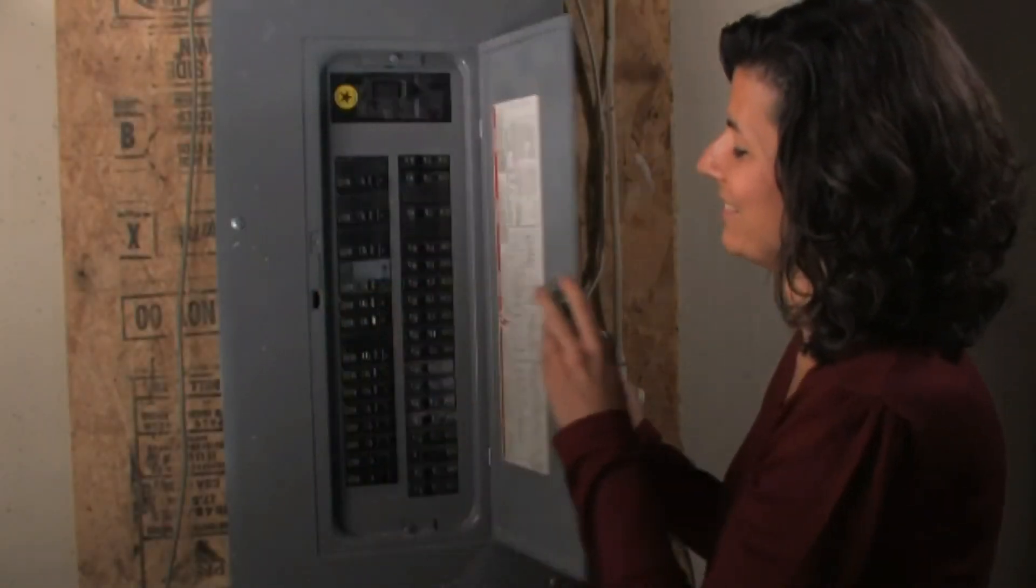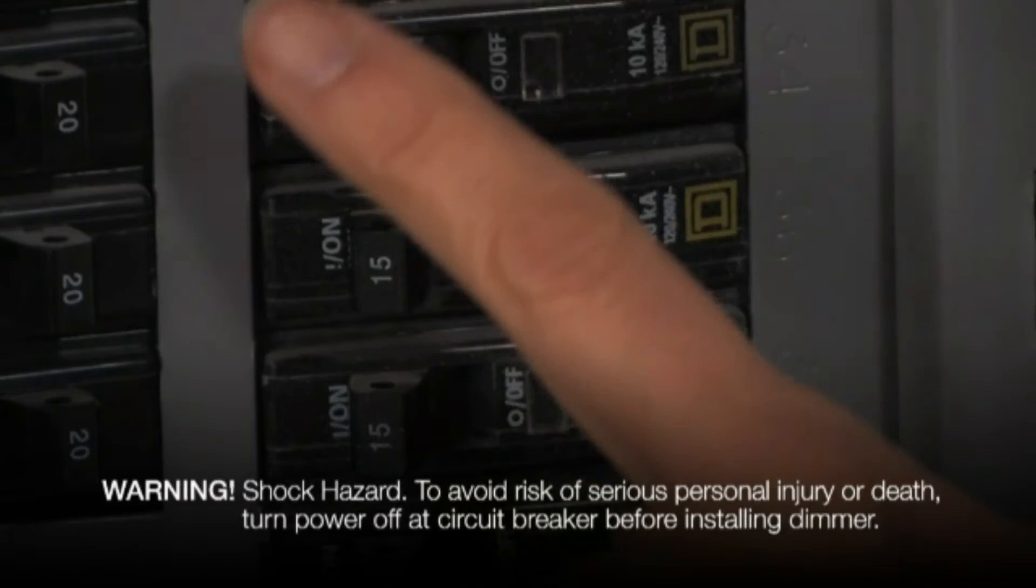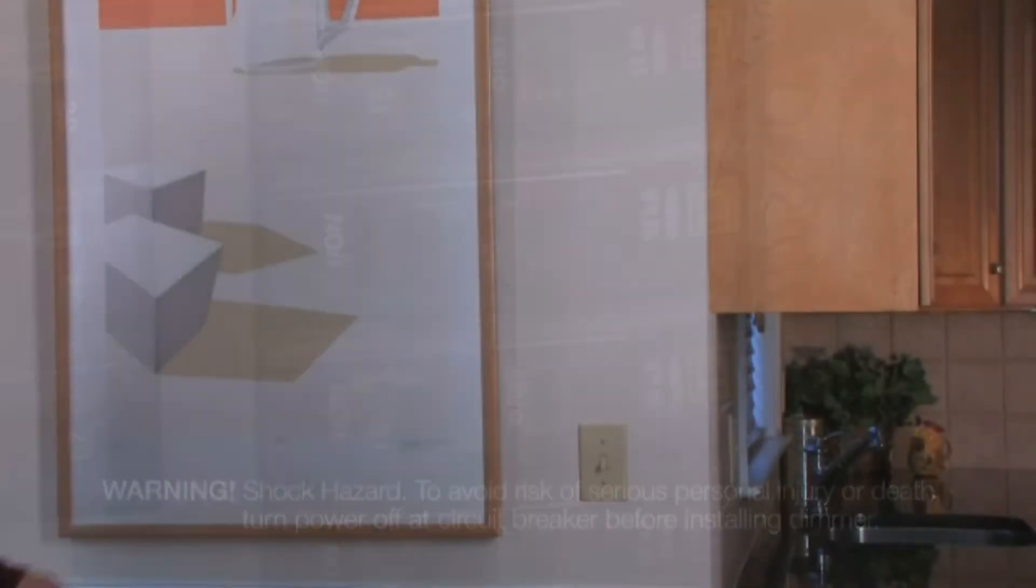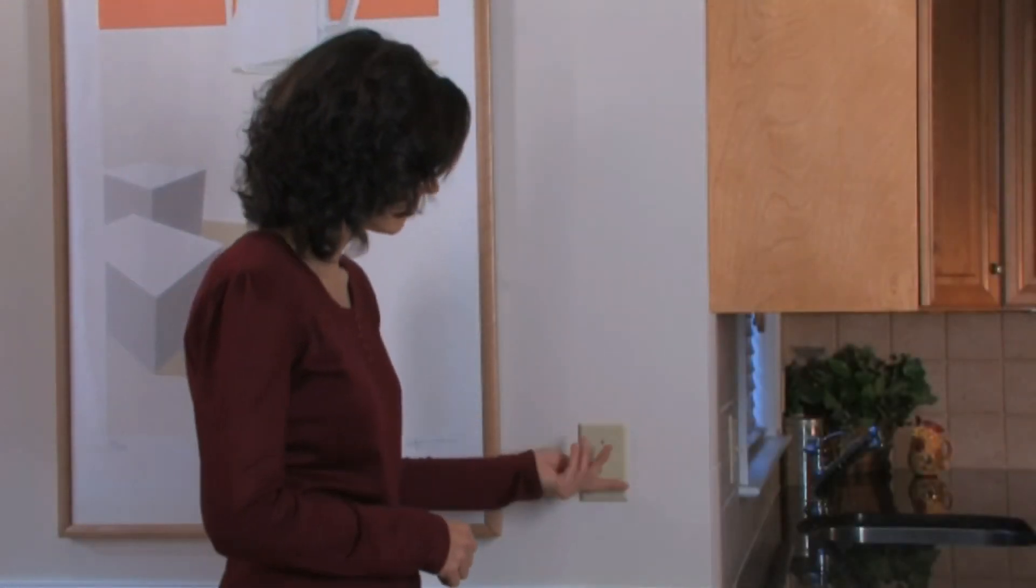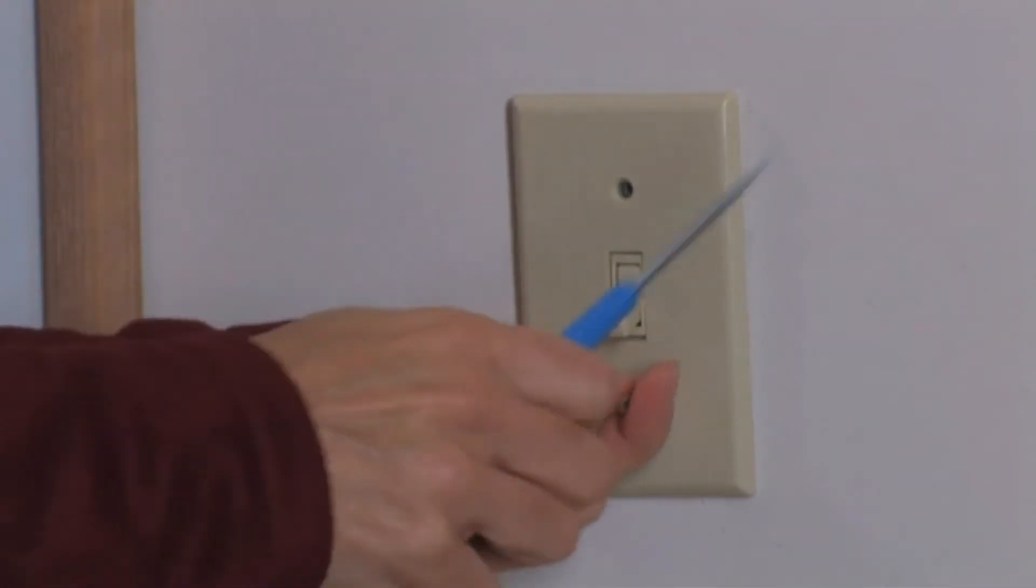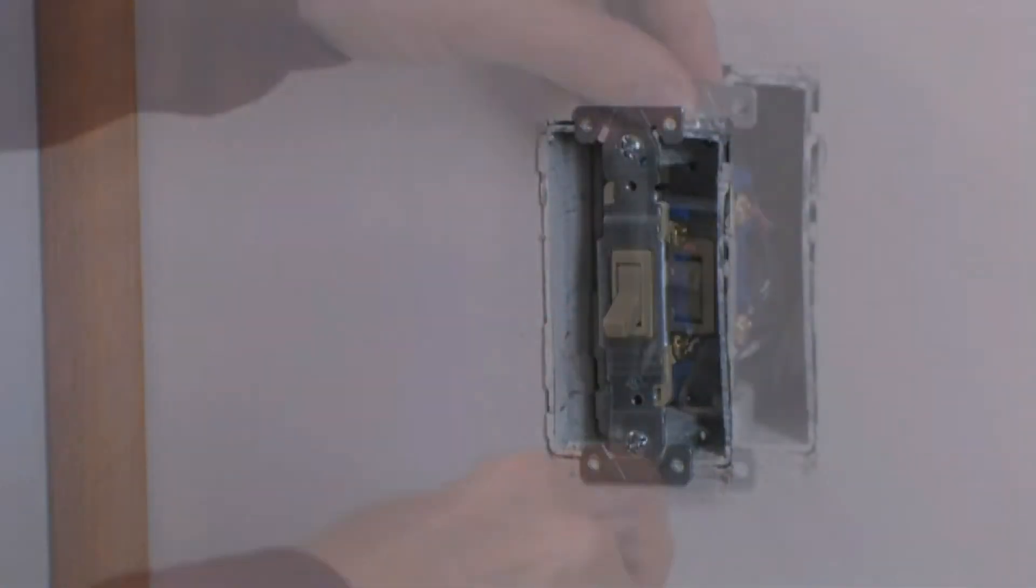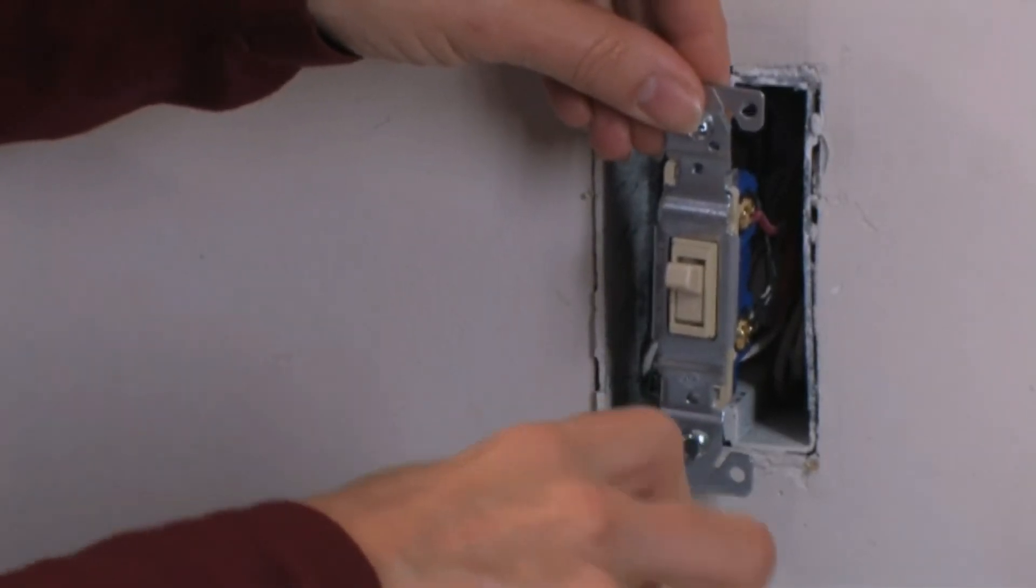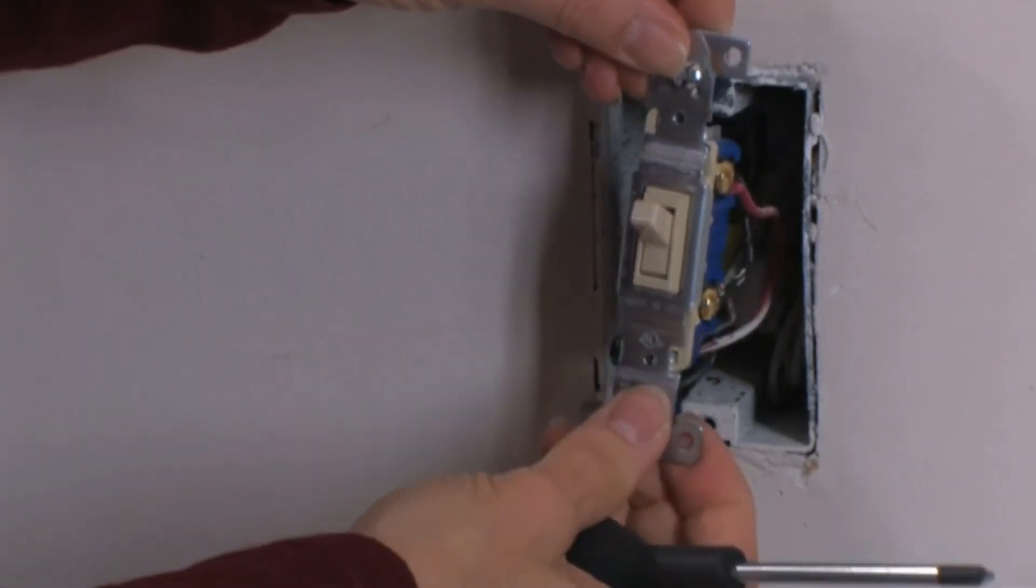Before you begin, turn the power to your switch off at the breaker. Test the switch you'll be removing to make sure power is cut off before continuing. Now you can remove your existing wall plate and the screws mounting the switch, and carefully pull the switch away from the wall.